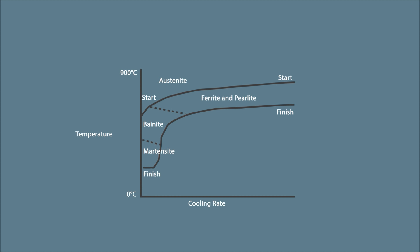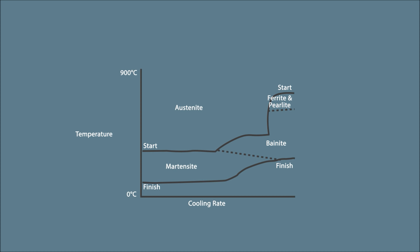Looking at the continuous cooling transformation diagram: if a steel has low hardenability, the ferrite and pearlite transformation will be shown in the upper left-hand side of the diagram, meaning it will be difficult or impossible to form martensite. If a steel has high hardenability, transformation to martensite will be shown at the bottom right-hand side of the diagram, meaning the steel will fully transform to martensite over a large range of thicknesses.